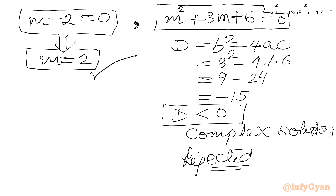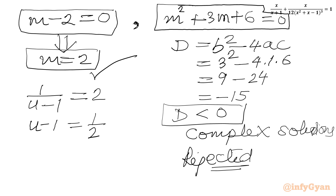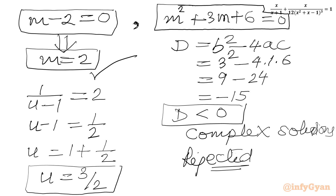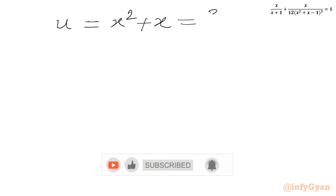Since m was our substitution 1 over (u minus 1) equal to 2, taking the reciprocal gives u minus 1 equal to one half. Adding 1 to both sides gives u equal to 1 plus one half, which is 3 over 2. And u was also a substitution: u equals x squared plus x, so x squared plus x equals 3 over 2.